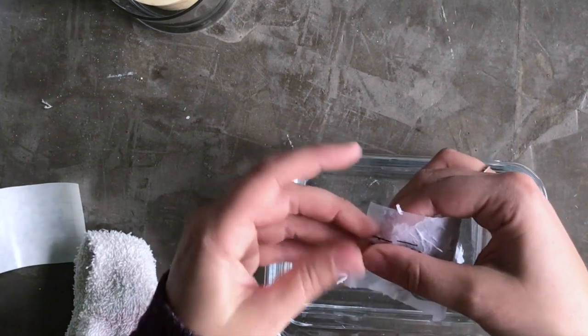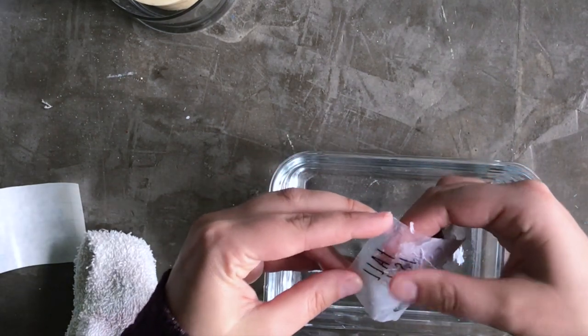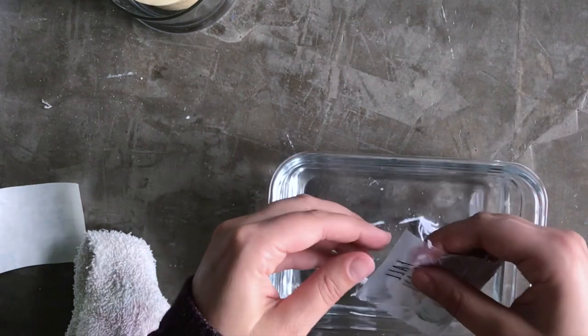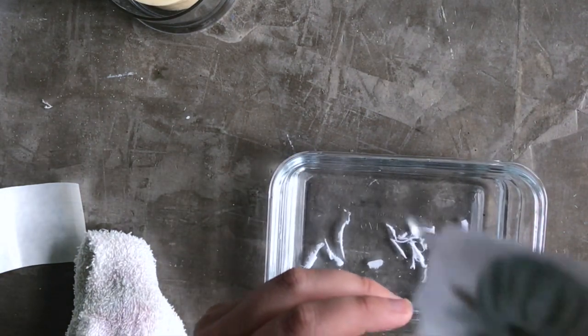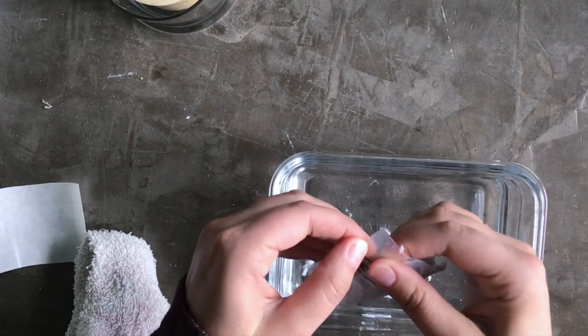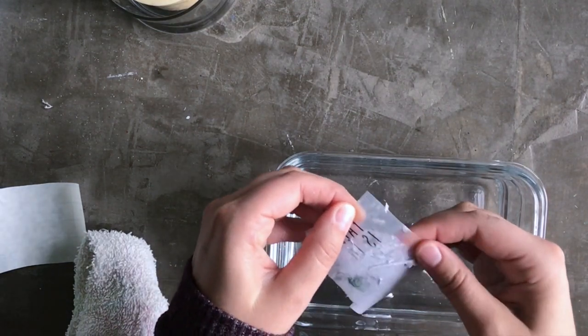You want to be extra gentle, especially over where your letters are. You can see I'm already losing a little bit of the tops of my letters because I was a little too rough with it. So just be careful over the ink areas.